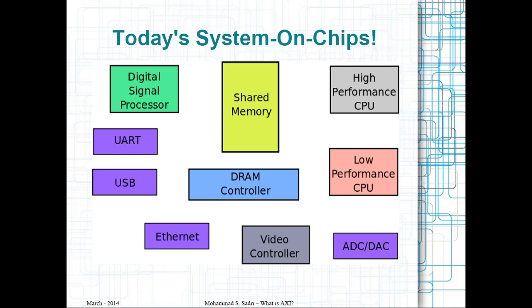The basic problem is that if you look at a chip in today's market, you can see that these chips contain a large number of various modules, and each of these modules is responsible for a special action. For example, in this diagram I am showing you right now, I have one high-performance CPU core and one low-performance CPU core. Sometimes when you have a very computationally intensive problem, you turn on the high-performance CPU core; other times you are running a very light application, so you turn off the high-performance CPU core and run everything on the low-performance CPU core.